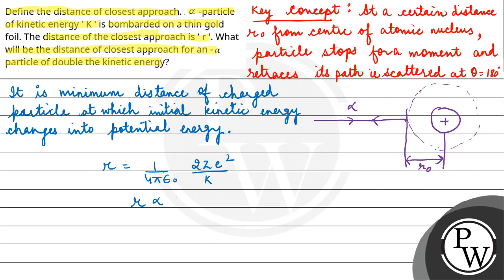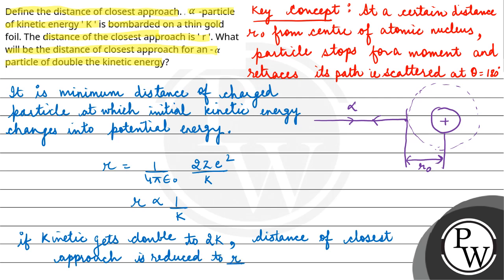So here we can say that r is inversely proportional to k. So if k, the kinetic energy, gets doubled to 2k, then distance of closest approach will reduce to r by 2.